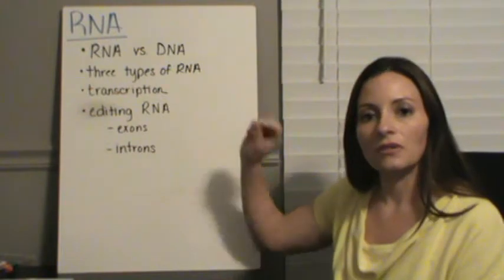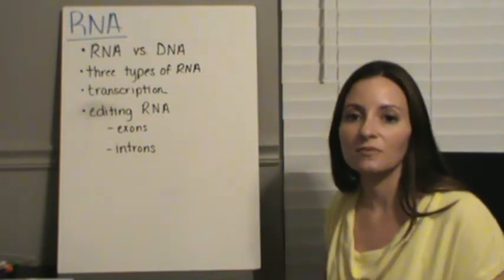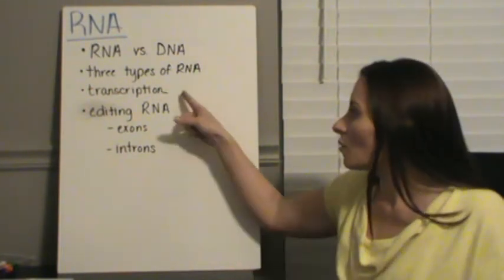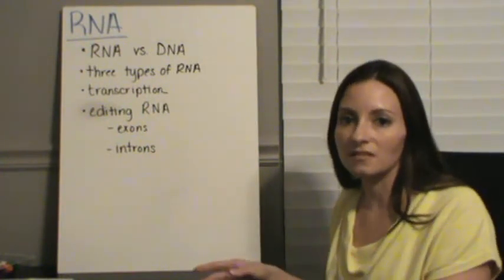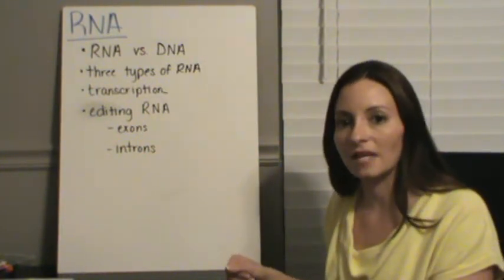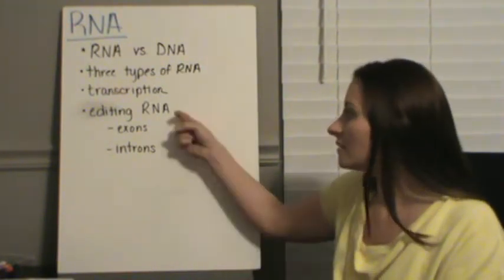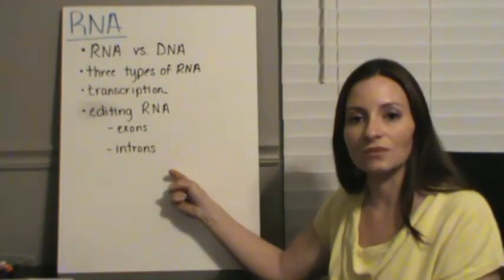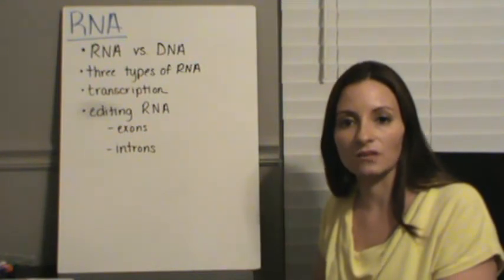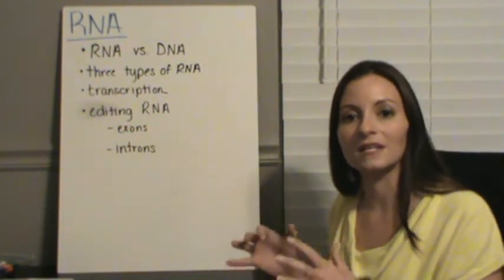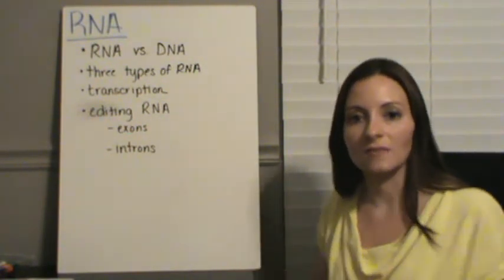We're going to talk about the differences between RNA and DNA, then the three types of RNA that you need to be familiar with. We're going to talk about transcription, which is how one of the pieces of RNA is going to be made and it's the first step in protein synthesis. And finally, we're going to talk about how we edit those RNA pieces so that we get exactly what we need to make the proteins.